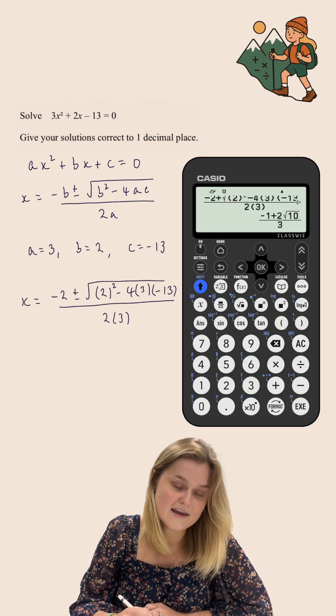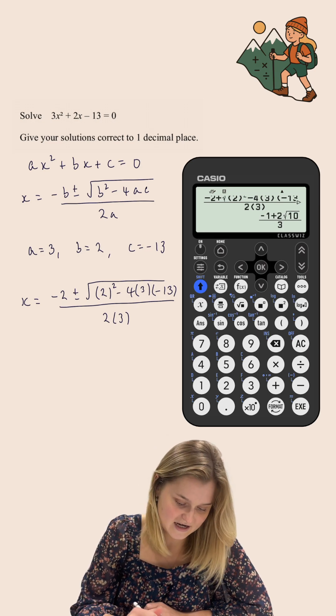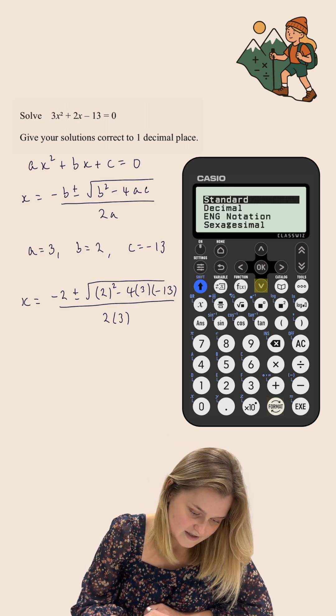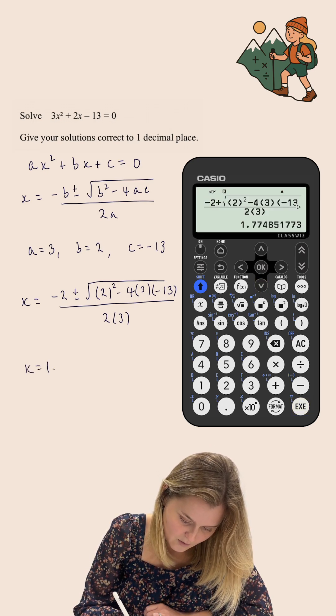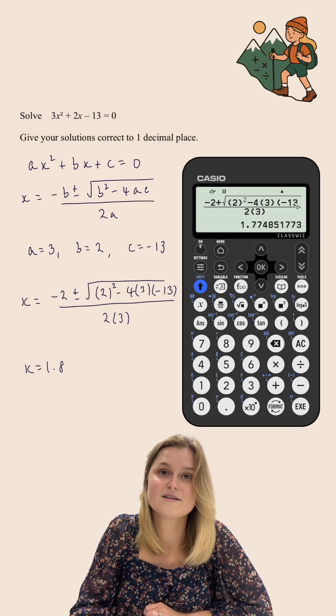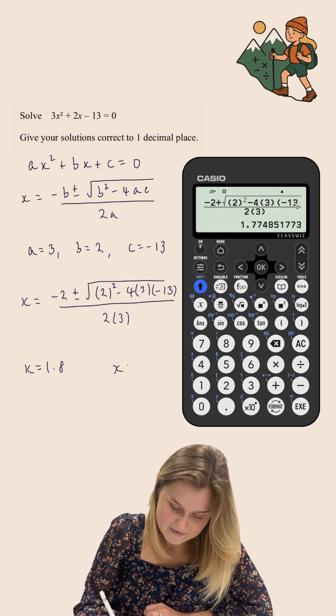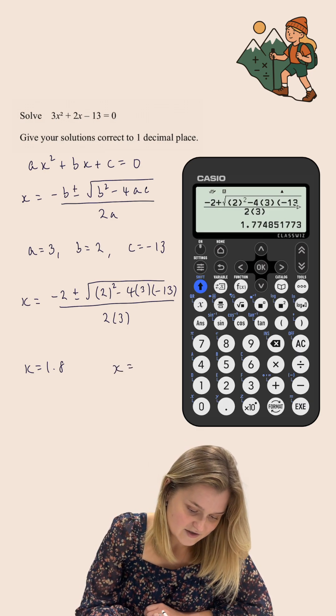If I press execute, it gives it to me in surd form initially. I'll use the format button and change it to a decimal. So my first solution for x is 1.8 to one decimal place. Now to get my second solution, I'm going to leave this formula exactly the same,